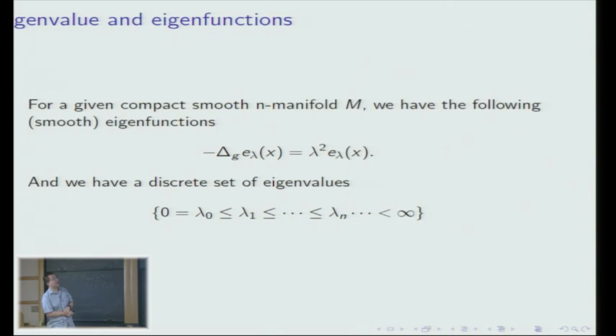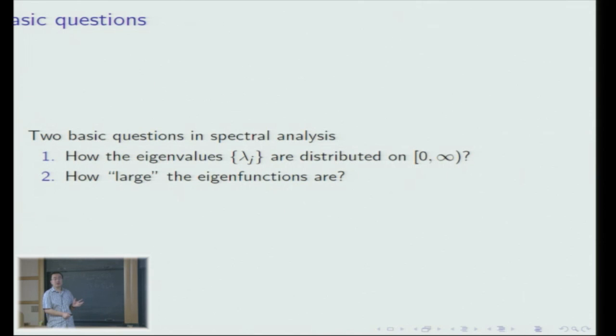On a smooth compact manifold without boundary, we have this setting: a Laplacian — I'm using the positive Laplacian for simplicity — and I'm talking about eigenvalues corresponding to the square root of the Laplacian, which is a pseudo-differential operator. We have smooth L2-normalized eigenfunctions, because these functions are basically speaking in L2 space. There is a basic fact that we have a discrete set of eigenvalues. The basic questions in this field are: first, how the eigenvalues are distributed on the real axis, and second, how large the eigenfunctions are.